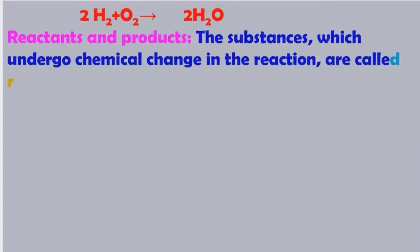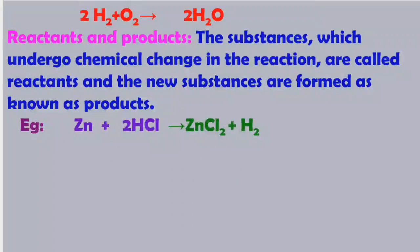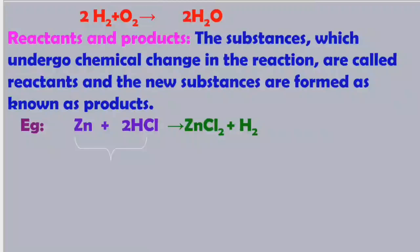The substances which undergo chemical change in the reaction are called reactants, and the new substances formed are known as products. For example, zinc reacts with hydrochloric acid to form zinc chloride plus hydrogen. Here, zinc and hydrochloric acid are the reactants, and zinc chloride and hydrogen are the products.